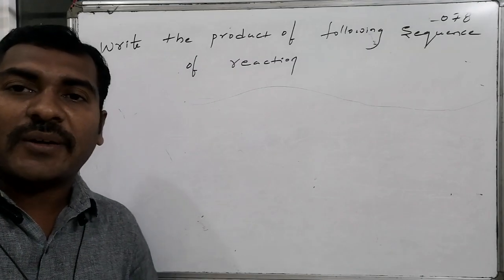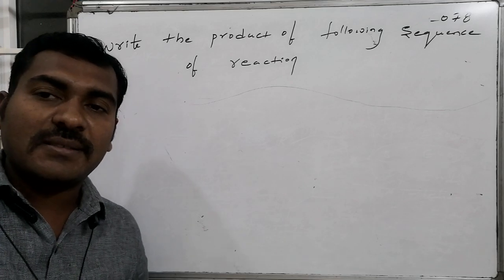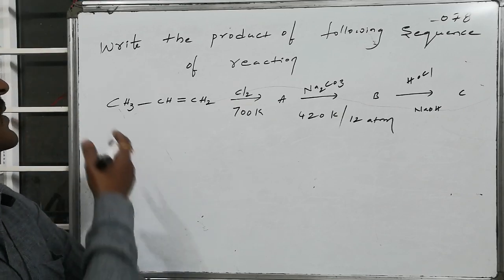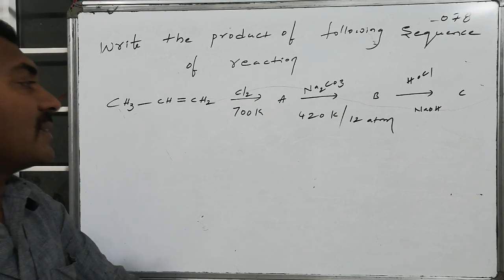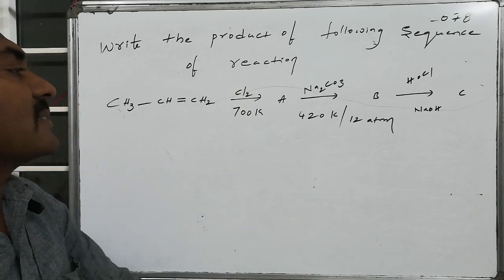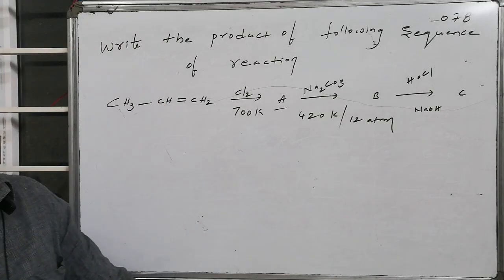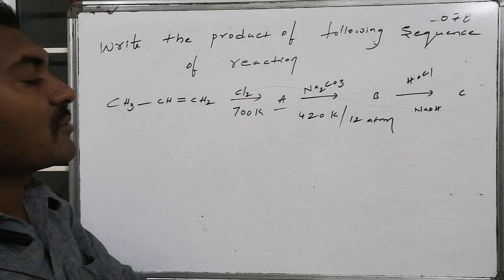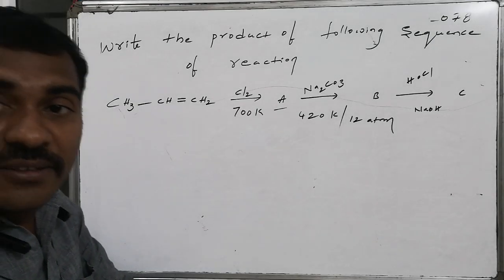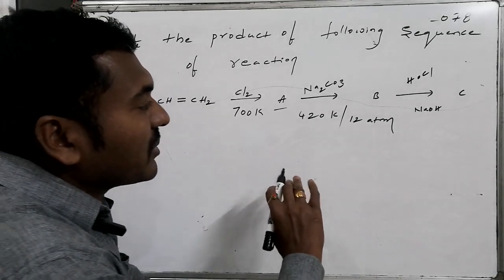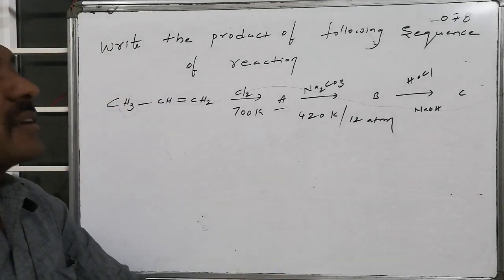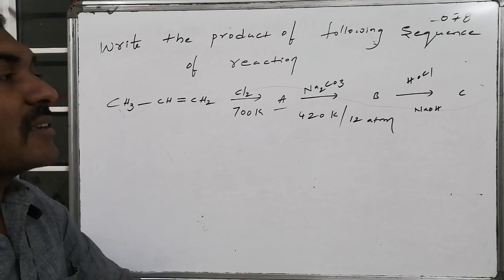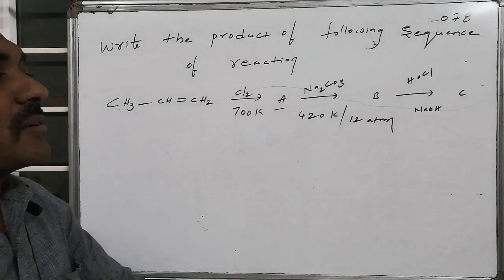Write the product of the following sequence of reactions. Propane reacts with chlorine at 700°C to form compound A. This A reacts with aqueous sodium carbonate at 420 Kelvin and 12 atm to form compound B. This B reacts with hypochlorous acid in the presence of a base like sodium hydroxide to give the final product C.